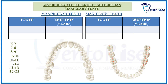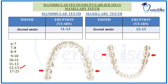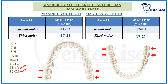After the maxillary canine erupts, the mandibular second molar will start erupting in the age group of 11 to 13 years, followed by the maxillary second molar erupting in the similar age group of 12 to 13 years. After the second molars, the third molars — both mandibular and maxillary — will erupt in the age group of 17 to 21 years. This age of eruption varies from person to person.